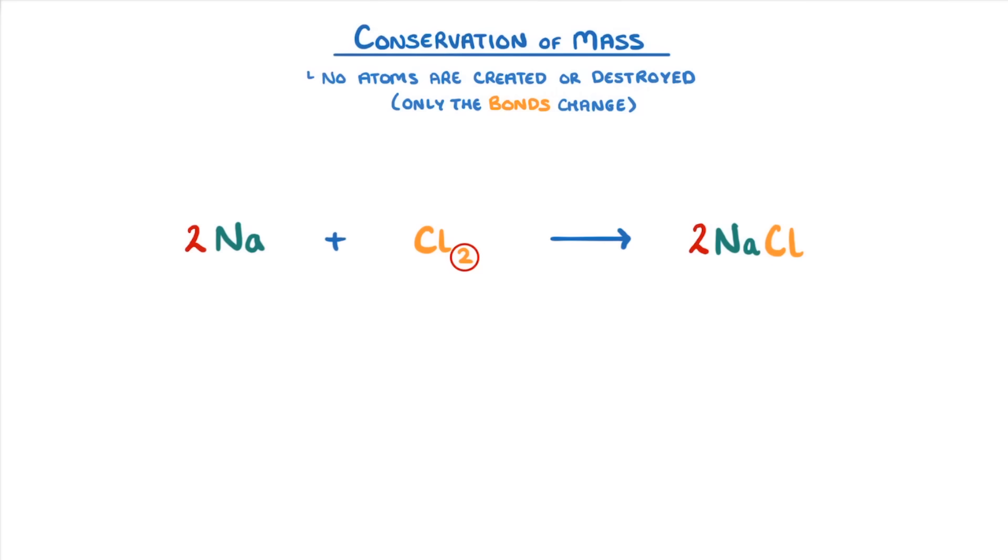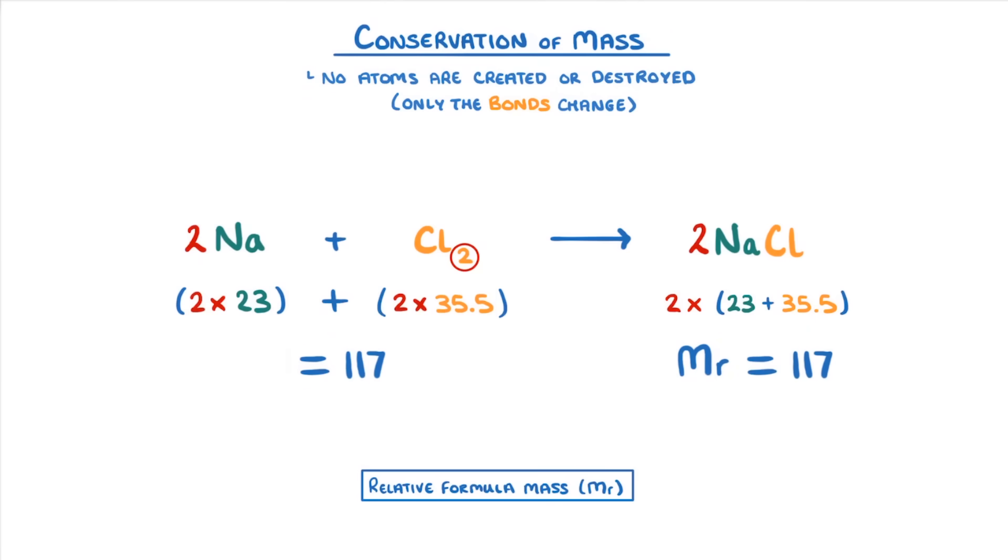We can also see this concept if we compare the total relative formula masses of each side. On the left, we have 2 times 23 for sodium, plus 2 times 35.5 for chlorine, which gives us 117. Then on the right, we have 2 times 23 plus 35.5, which is also 117, so we can see that both sides do balance.